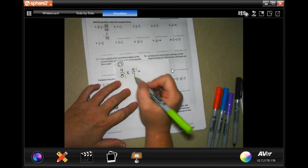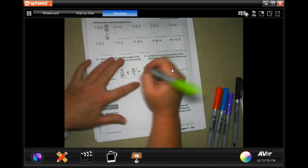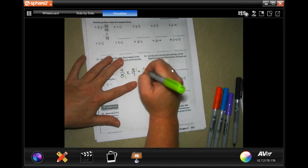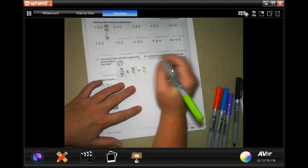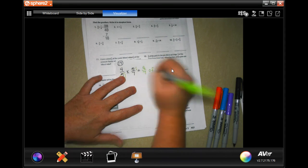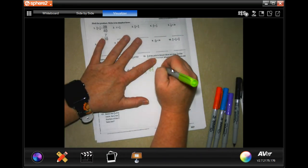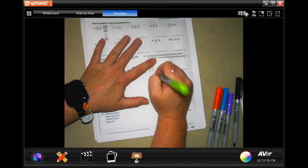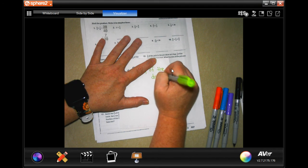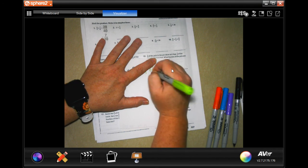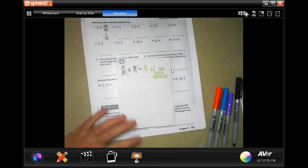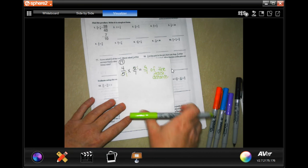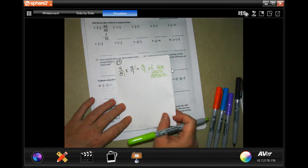Now 4 doesn't go into 7, 7 doesn't go into 4. I'm just going to have to multiply straight across. 4 times 1 is 4, 1 times 7 is 7. There we go. So 4/7 of the distance, or of the track distance. Word problem, word answer, you got to label it.